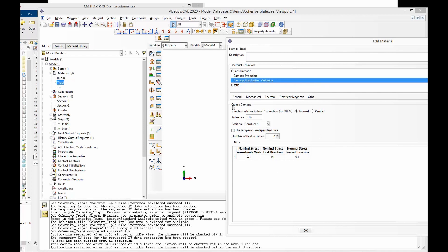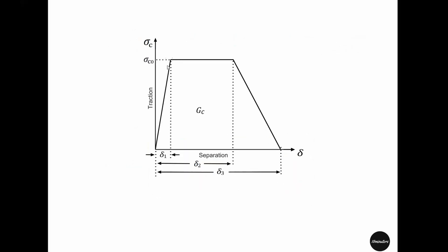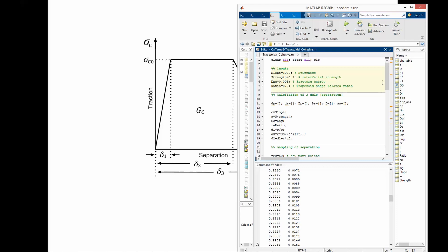While implementing these formulas, especially to find the damage variable — the damage value for a given separation at the transition from the linear elastic part to the plateau, and also at the transition from the plateau to softening — we have to be very careful that we have a lot of sample points around these transitions. Otherwise, we will have numerical instability for simulations with a trapezoidal cohesive law. This point is very important, but it has been taken care of in this code.